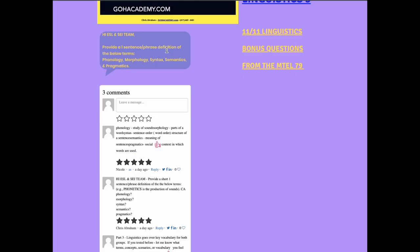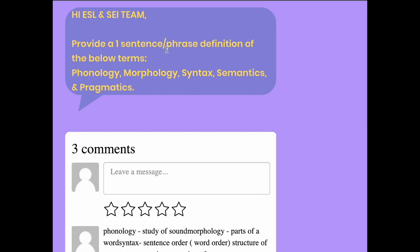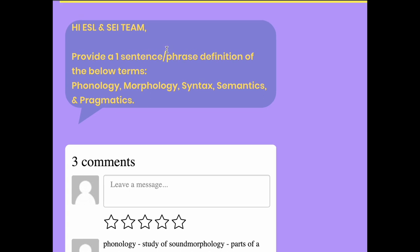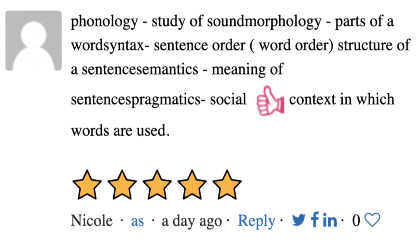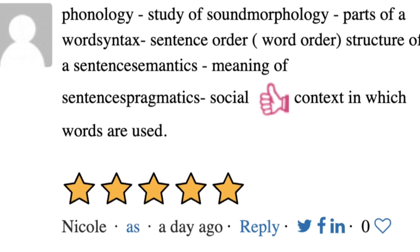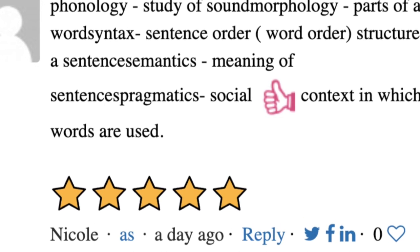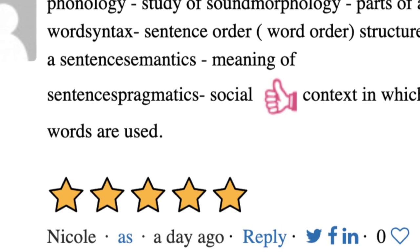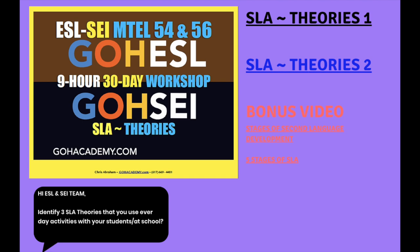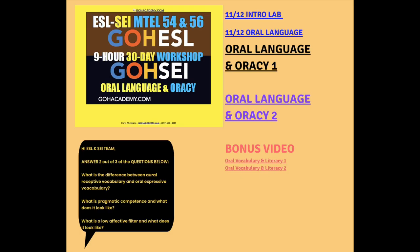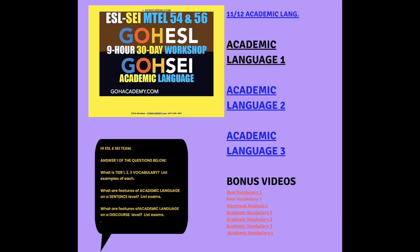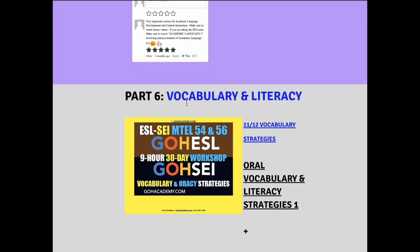I want you to go through and post and respond back to each of these questions in each of the sections. This one right here — if we zoom in — it says: provide a one sentence or phrase definition of the below terms: phonology, morphology, syntax, semantics, and pragmatics. I want you to go through and give a quick definition of each one of those vocab terms. There are a few more — there's a question under second language acquisition theories, oral language and oracy, and academic language.